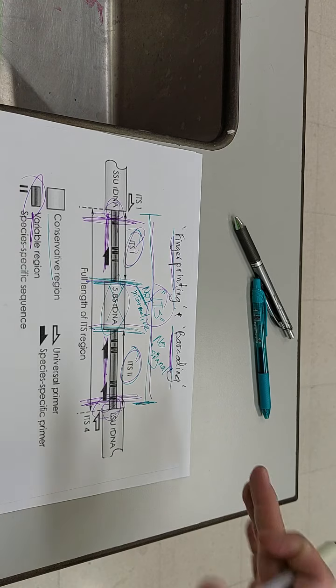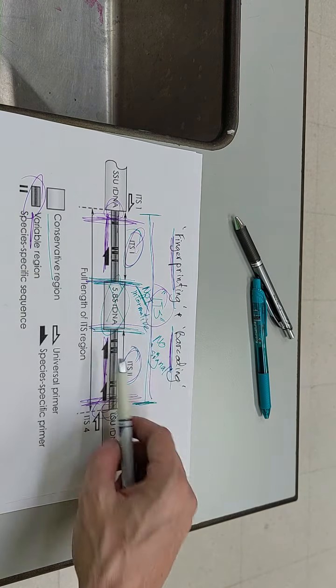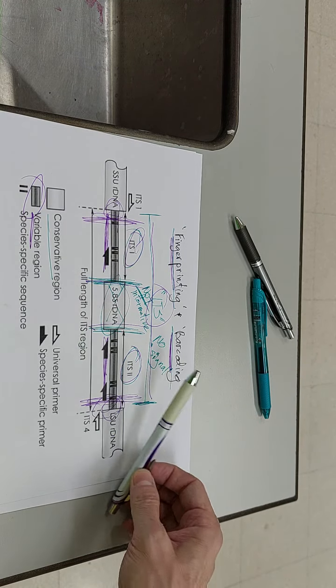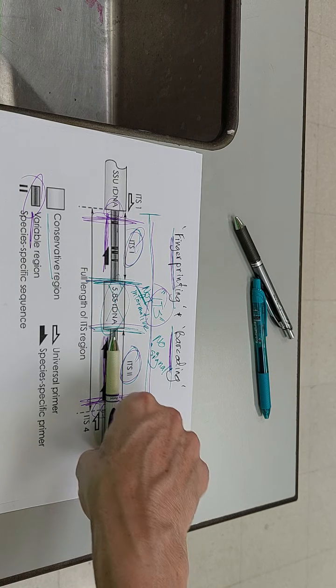The only way to verify that is either with two things that are so different that it would be obvious, that the ITS sequences would be sort of like they call a chimera or sort of like a mix of the two parental sequences, or you go to other techniques that I've talked about on some of my Facebook posts.